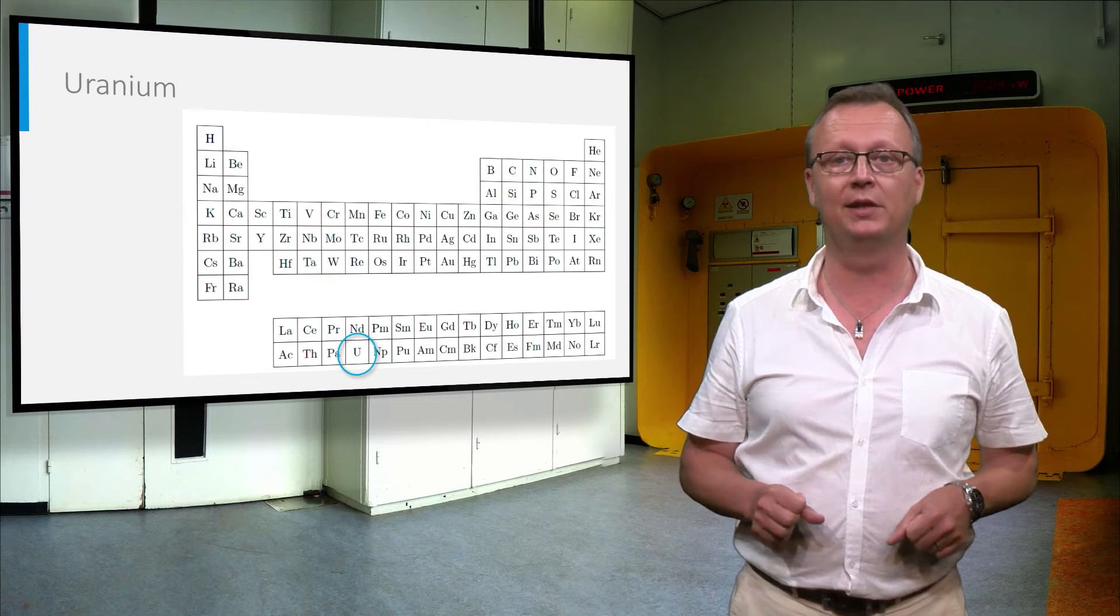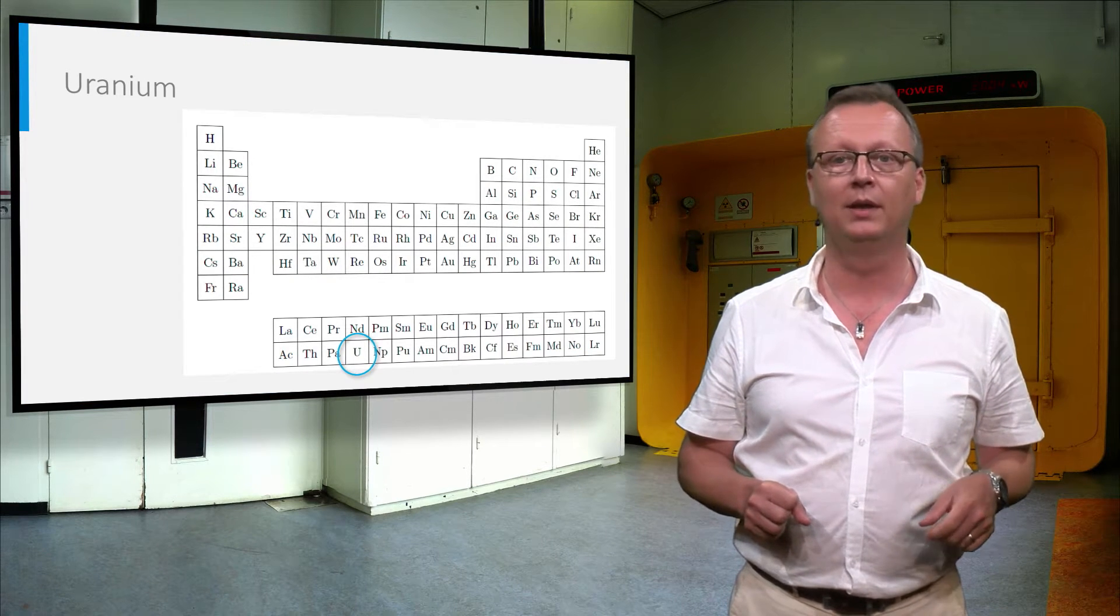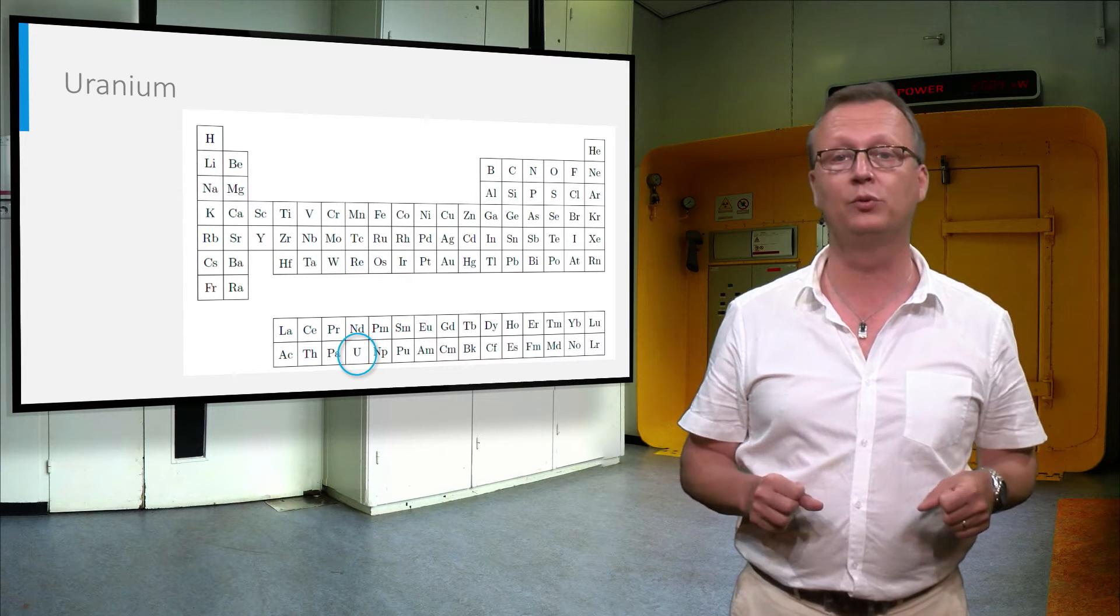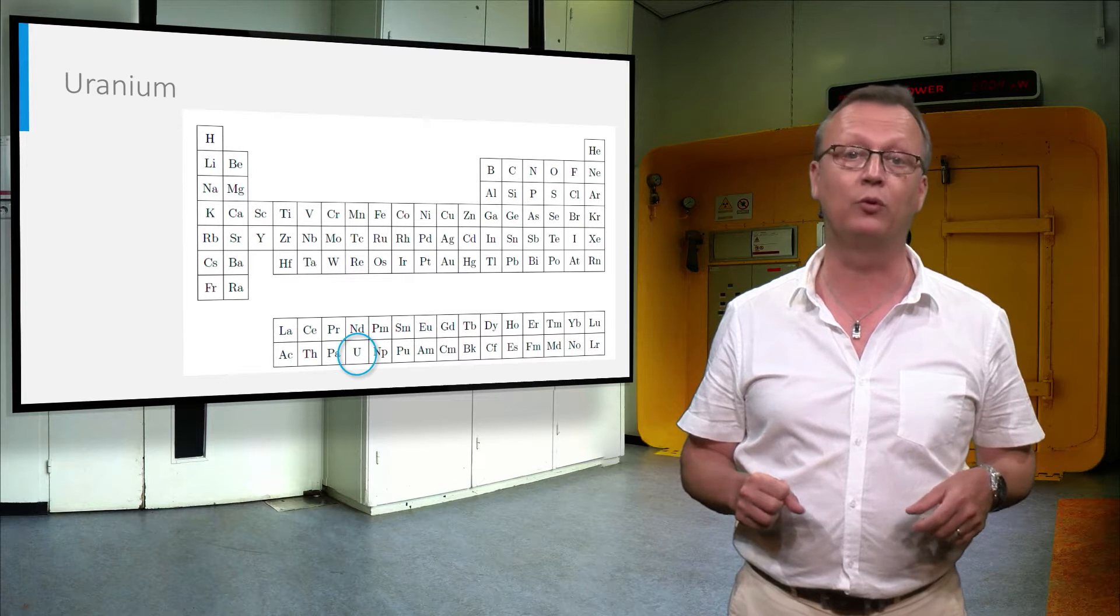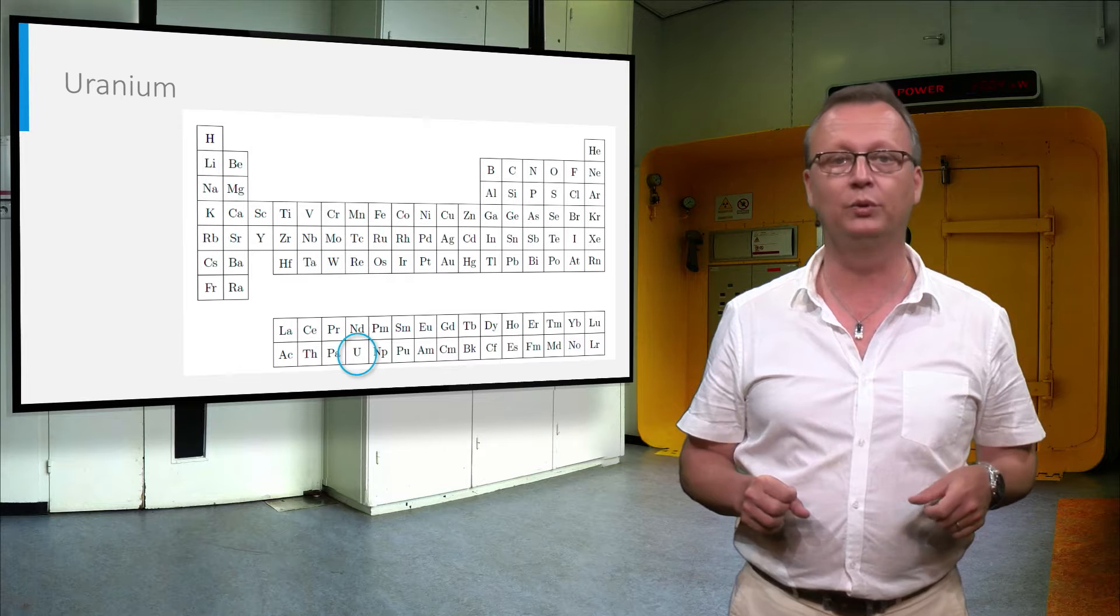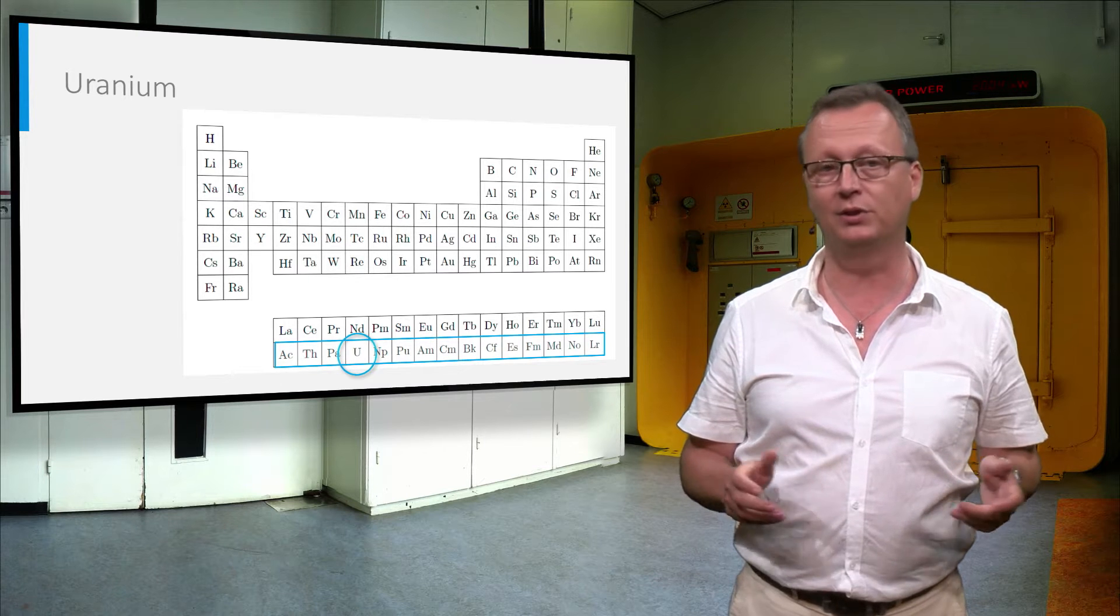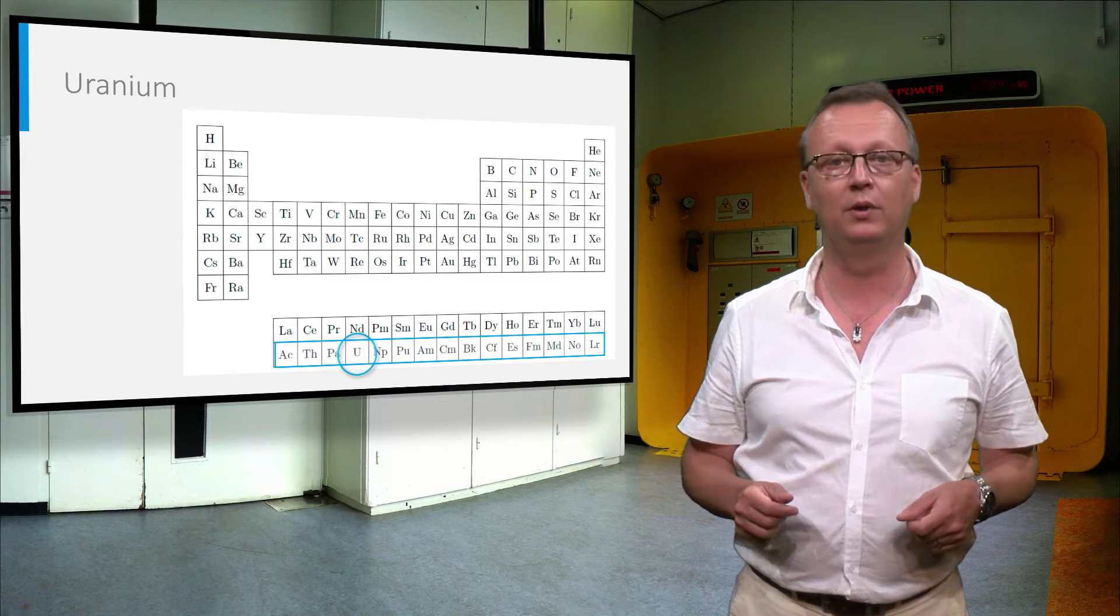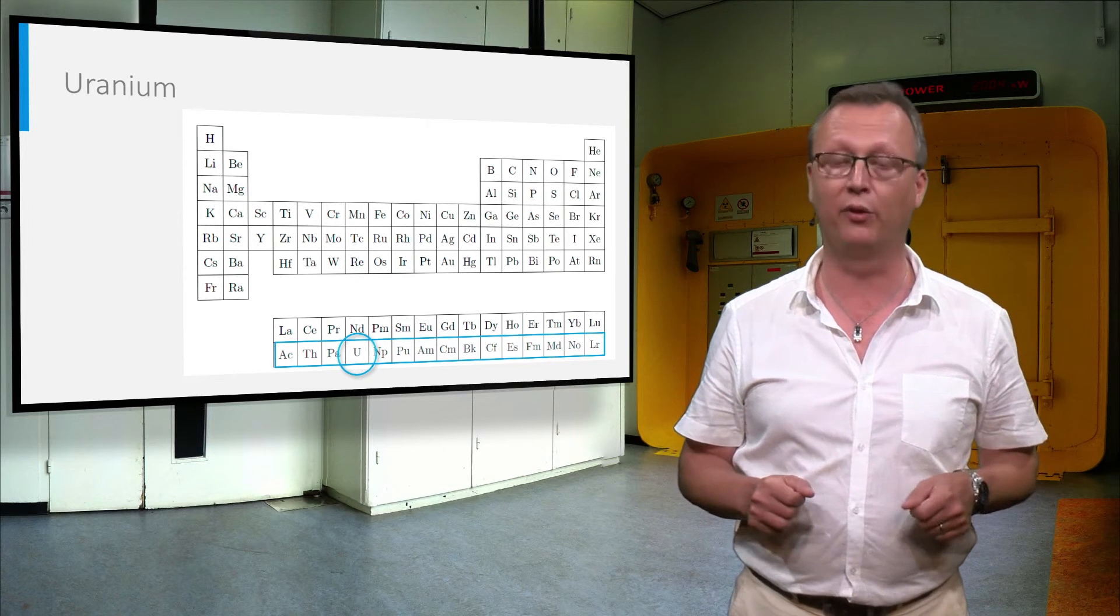Uranium is the 92nd element in the periodic table and it can be found at the far end. As you may recall from secondary school, the periodic table groups the elements according to the filling of the electron shells. Uranium belongs to the actinide series that consists of actinium and the 14 elements of the 5F block, including plutonium and thorium.